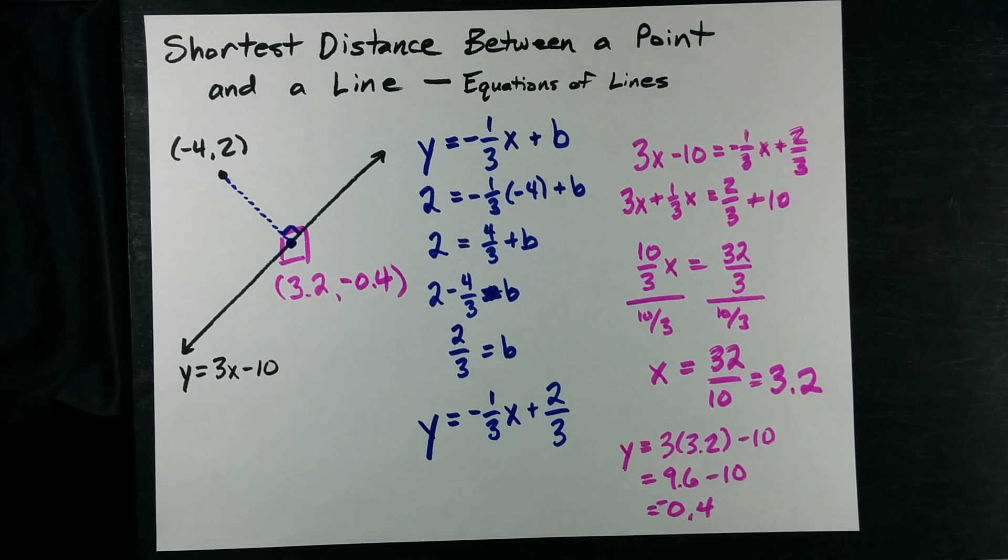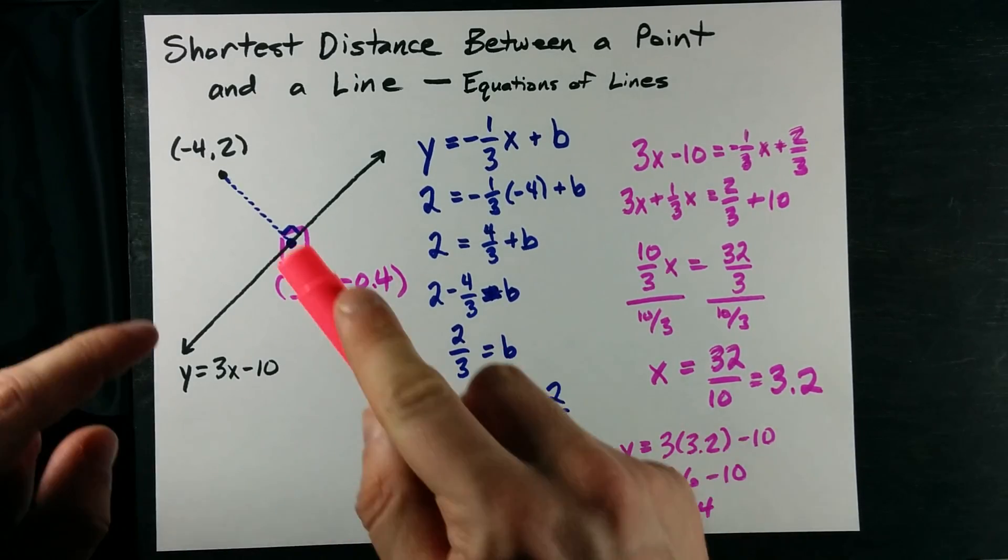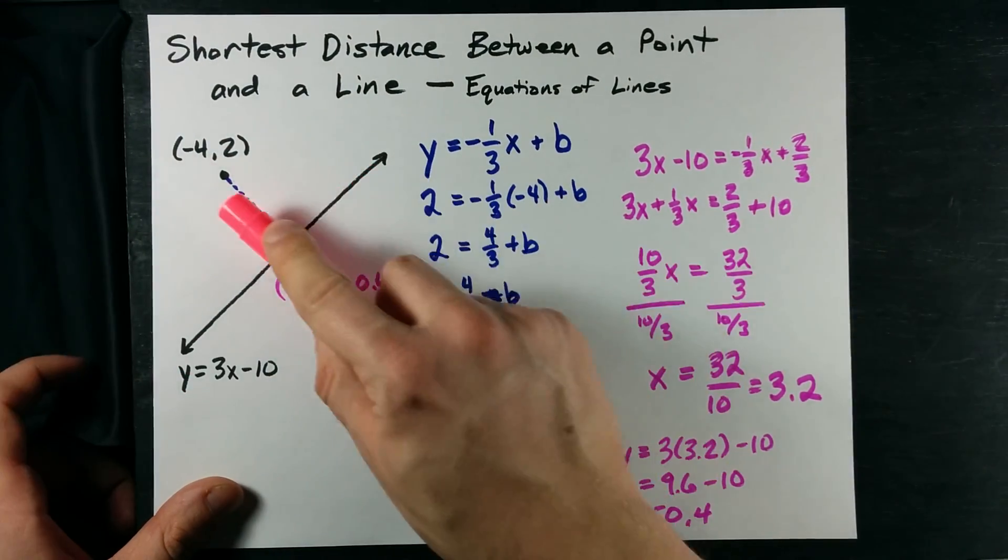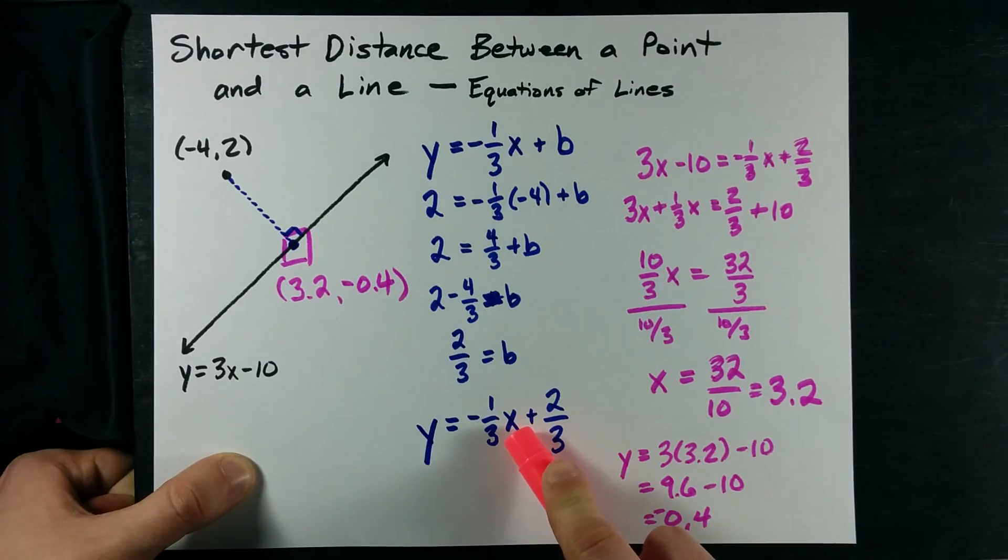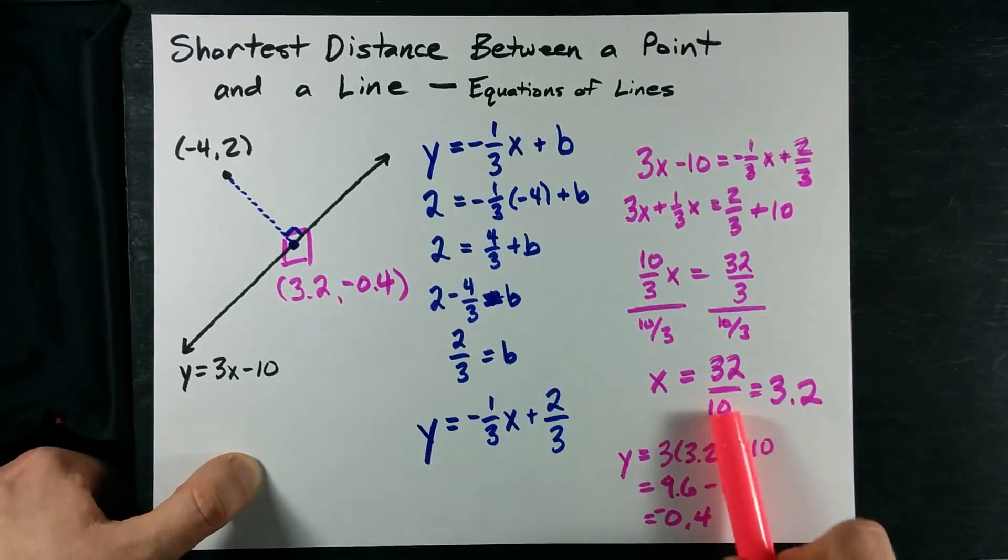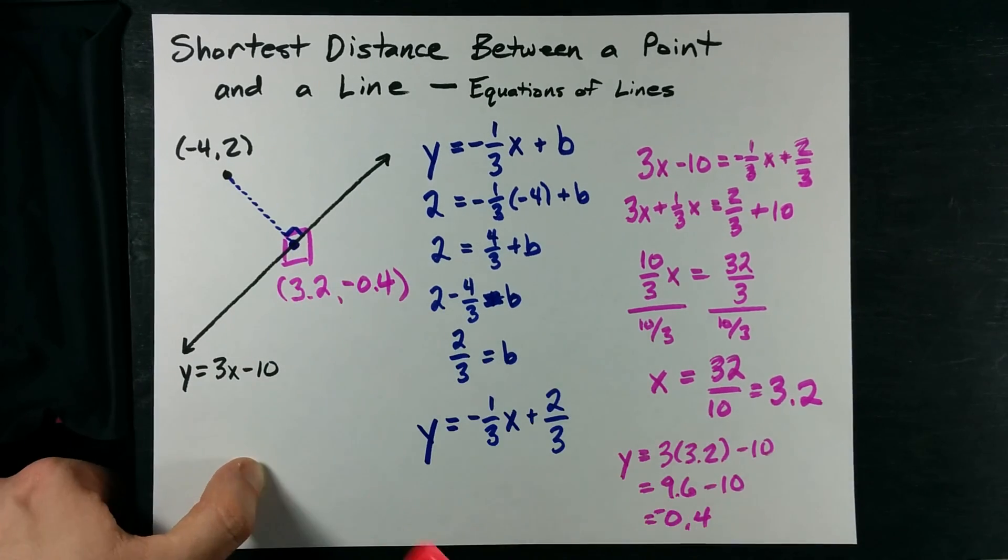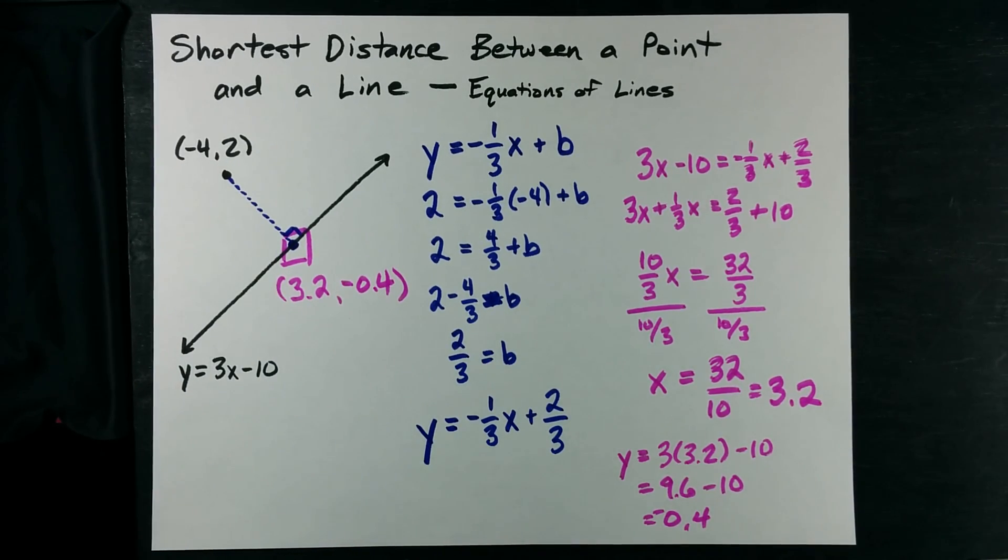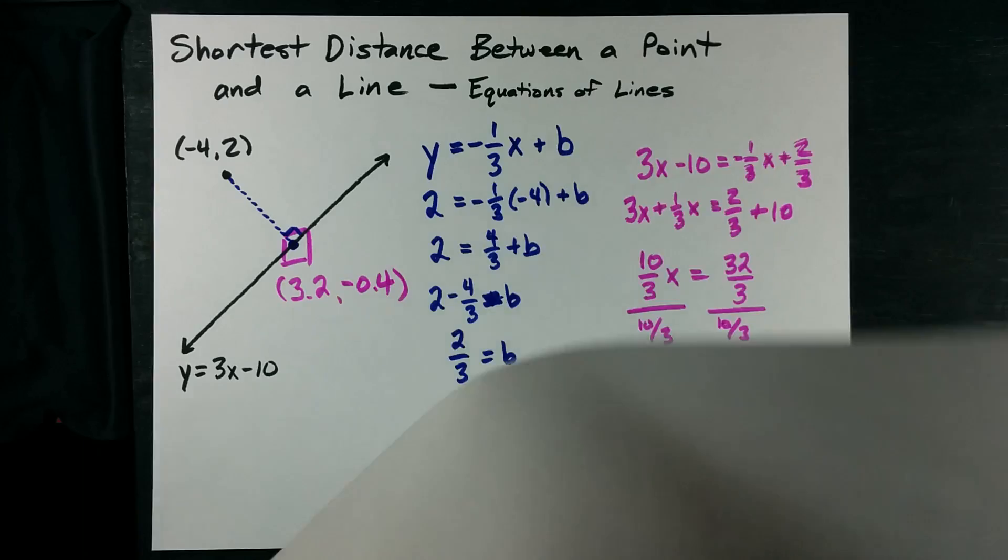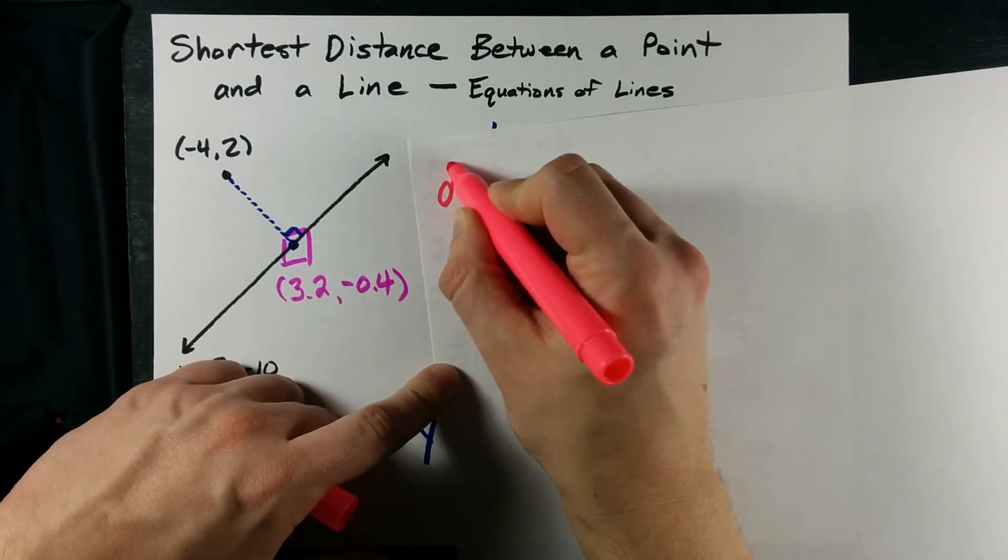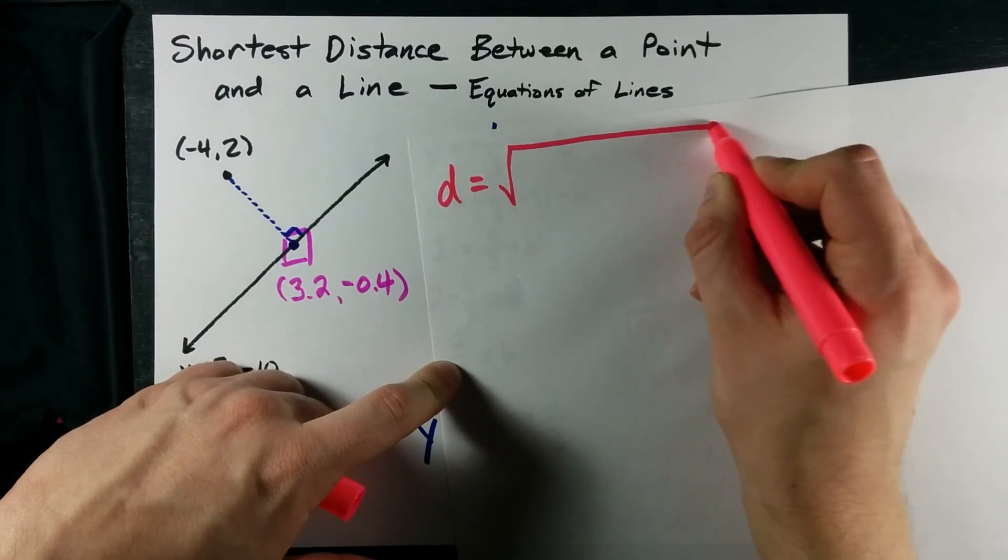Let me reiterate how we did that. I found the equation of the line perpendicular to this one that went through that point. Then, I set the two equations equal to each other to get the x and y where the two intersected. Now, we're still not done because they actually asked for what the distance was between those two. I have to use the distance formula for that.